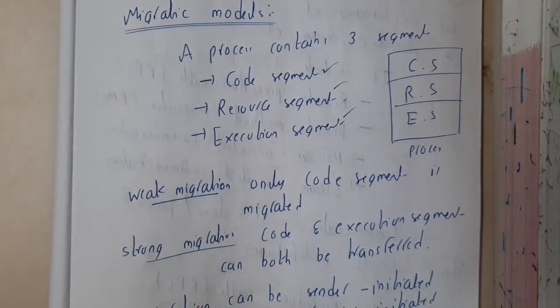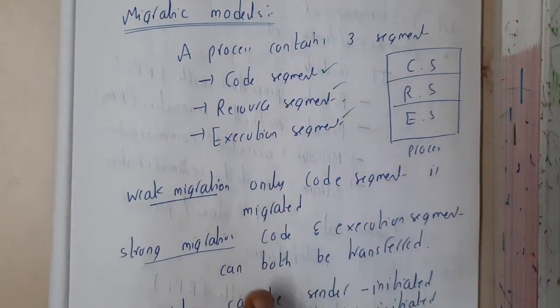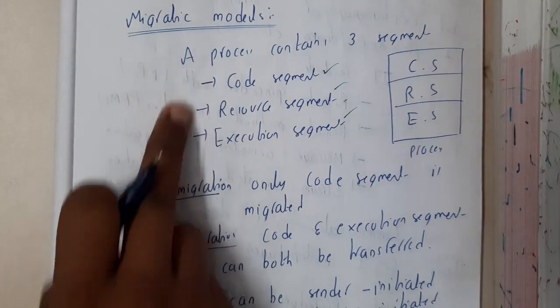In weak migration, we migrate only the code because that is the main thing. Only that is transferred, then we call it weak migration.